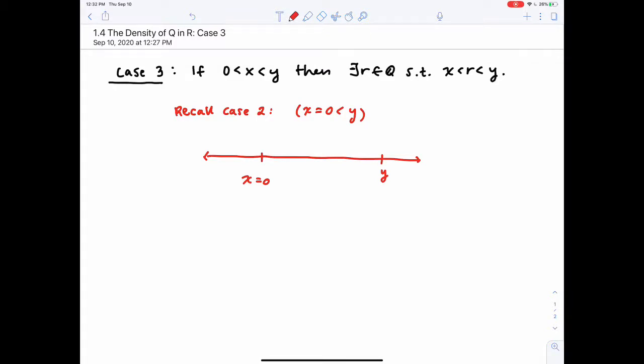So, if 0 is less than x, less than y, we need to show that there's a rational number r that sits between them.